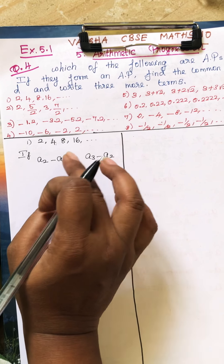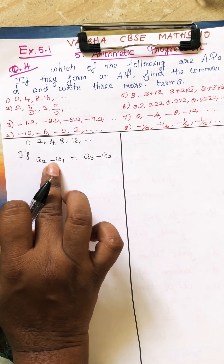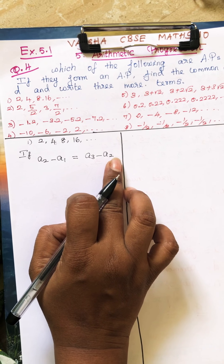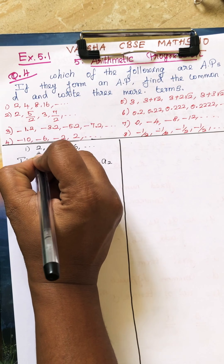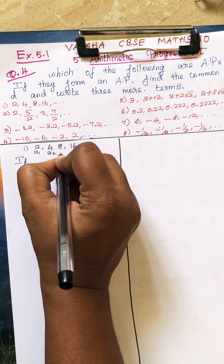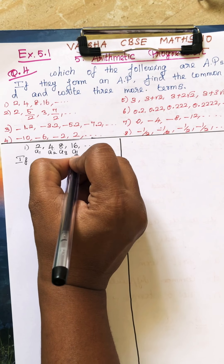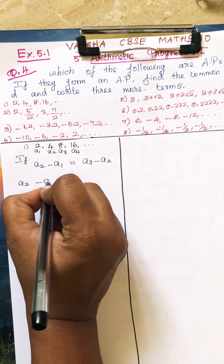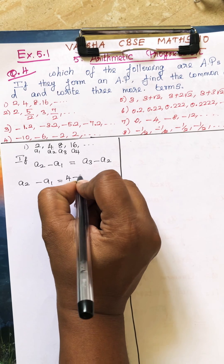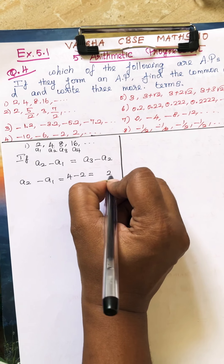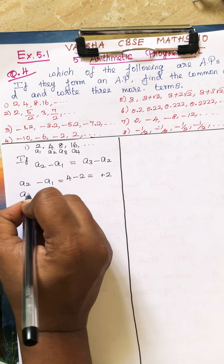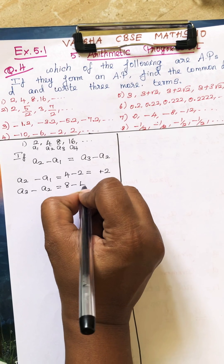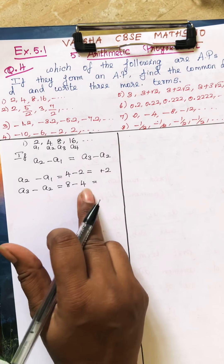So you are going to subtract the second term and first term, and the third term and second term. In this question, the terms are A1, A2, A3, and A4. So what is A2 minus A1? A2 is 4 minus 2, so you get 2. Then A3 minus A2: A3 is 8 minus A2, which is 4, so you get 4.